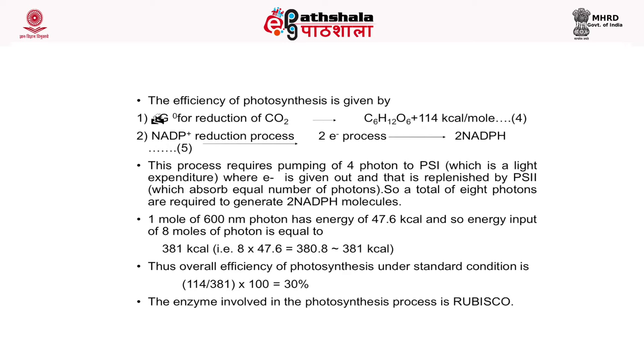So the overall efficiency of photosynthesis is only 30%, and the enzyme involved in this photosynthesis process is Rubisco.